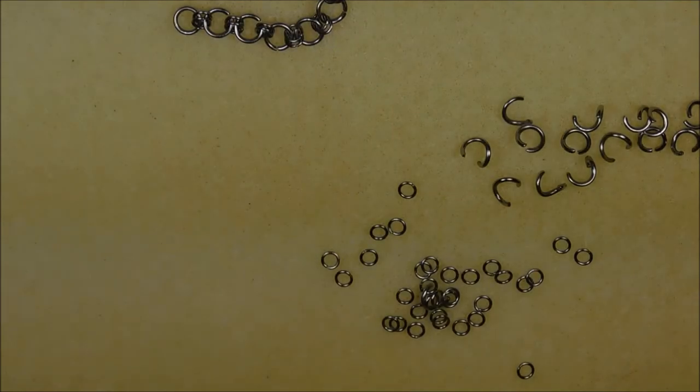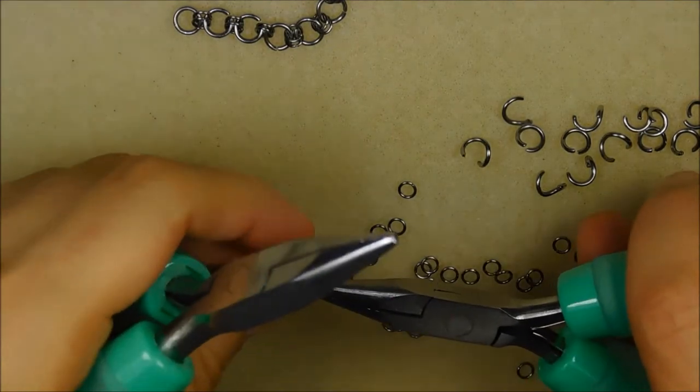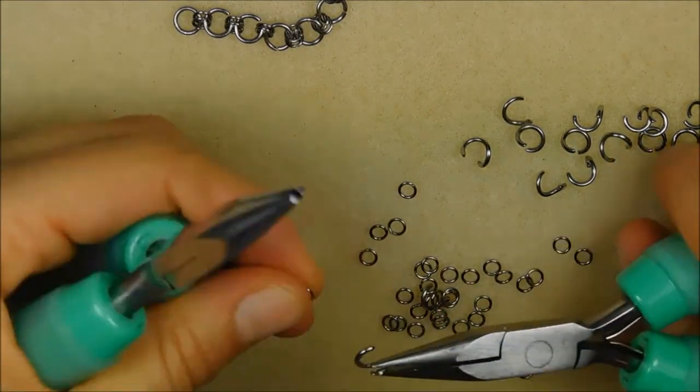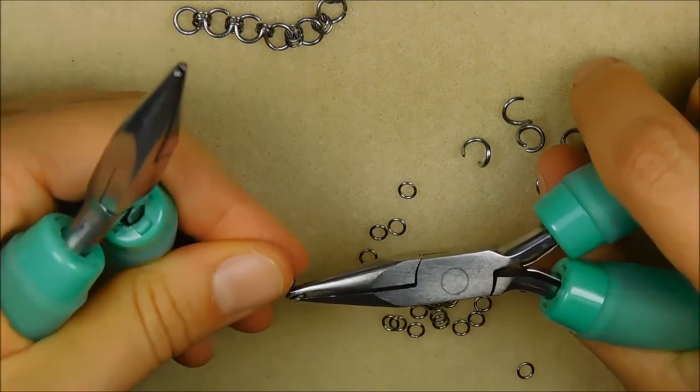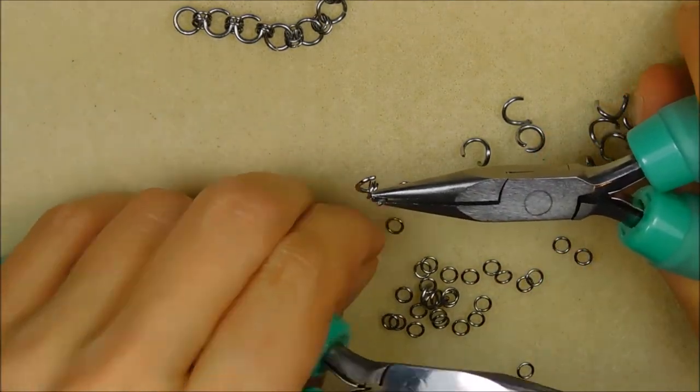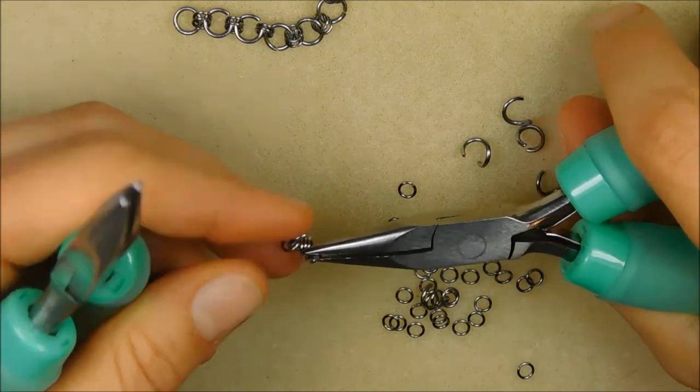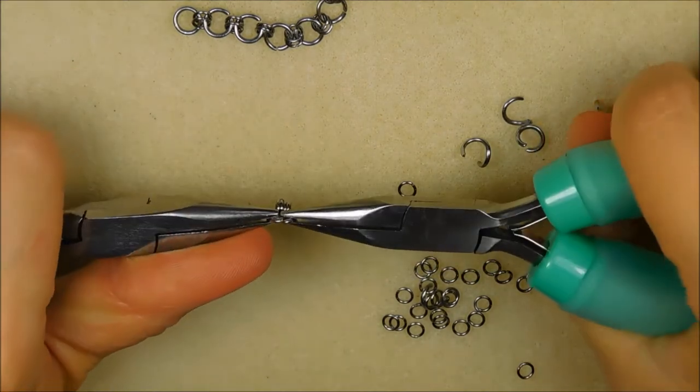We will make the toe loop by using the speed weaving steps we used earlier in this lecture. This one-two-one chain will be four inches long and have 31 segments. The last segments on each end should be two four millimeter rings.